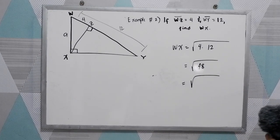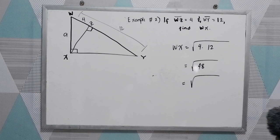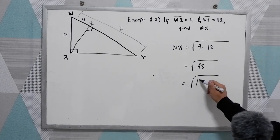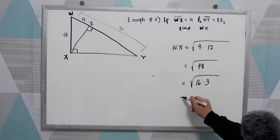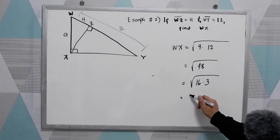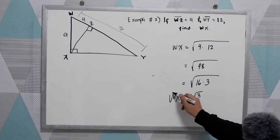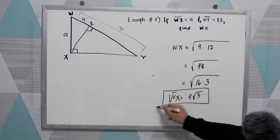Now, square root of 48. Factors of 48, we use a perfect square number. So that is 16 times 3. Square root of 16, that is 4, square root of 3. So WX is 4 square root of 3.